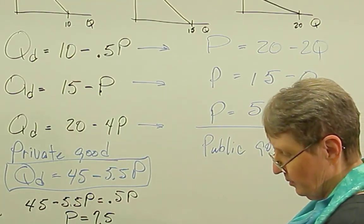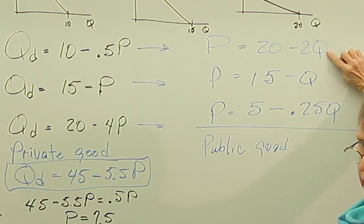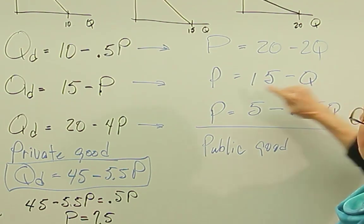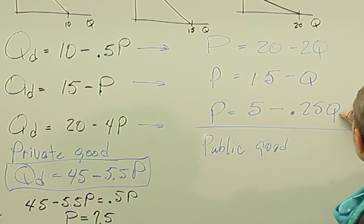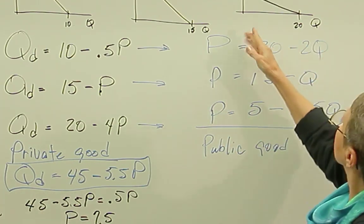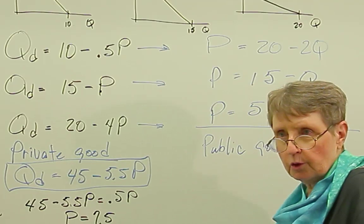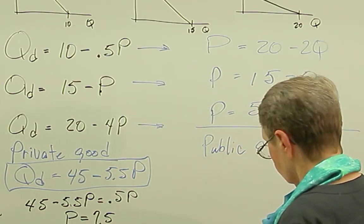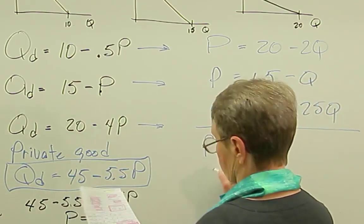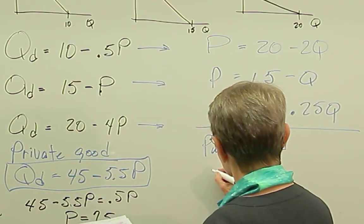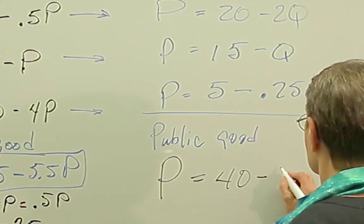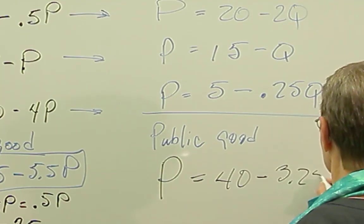Public good says, unit number one is worth how much to Larry? Unit number one is worth how much to Curly? Unit number one is worth how much to Moe? So what we're doing is we're taking a quantity and we're summing up the values vertically. And so this equation, in terms of a public good, when we sum it up, it's a linear approximation.